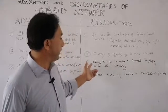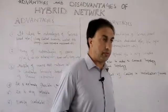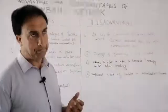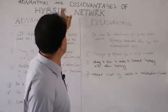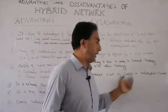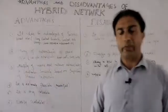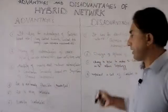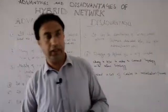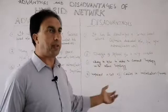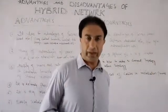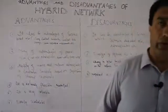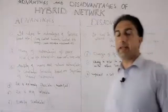The third drawback is that a change in hardware is required in order to connect one topology with another topology. To connect to another network topology, the existing topology will need to be changed, which is another drawback. The last disadvantage is that a lot of cables are required during the installation process — because it combines both server-based and peer-to-peer networks, it requires a lot of cables especially over long distances, resulting in an increase in the overall cost of the network.